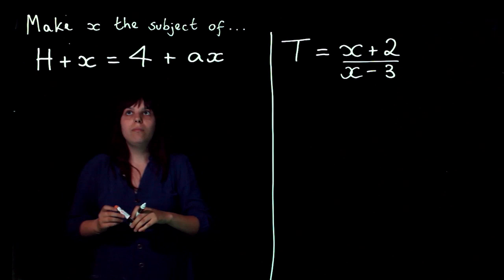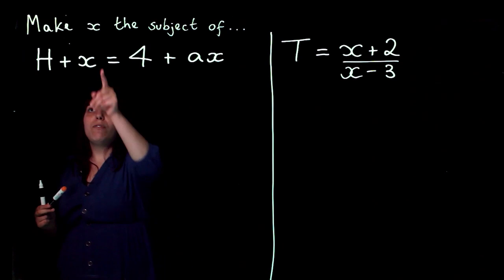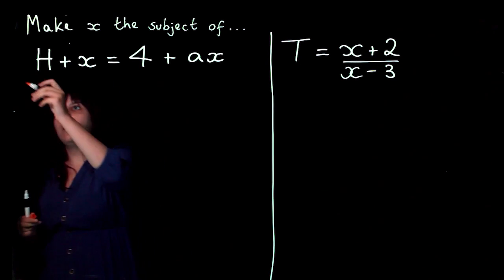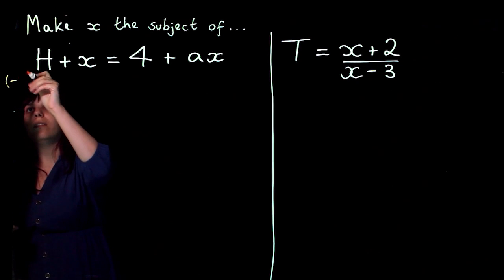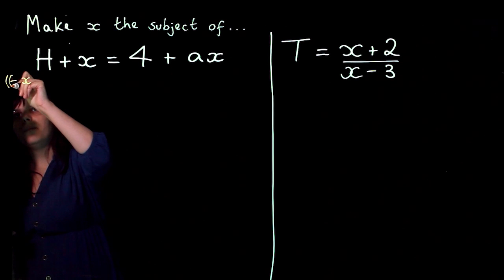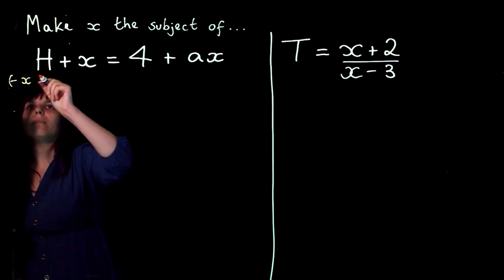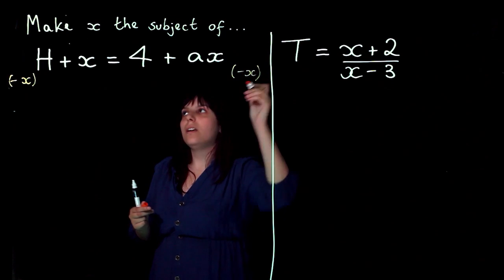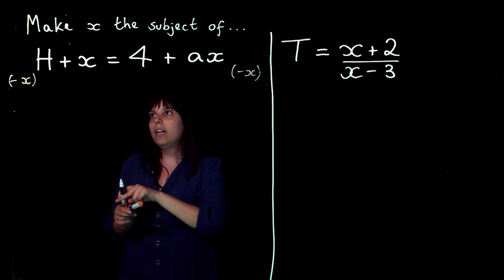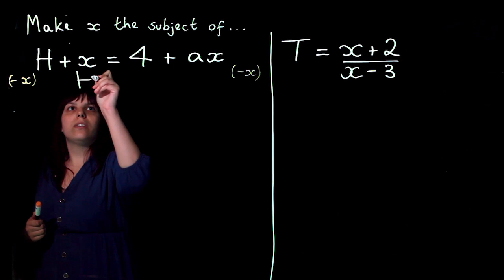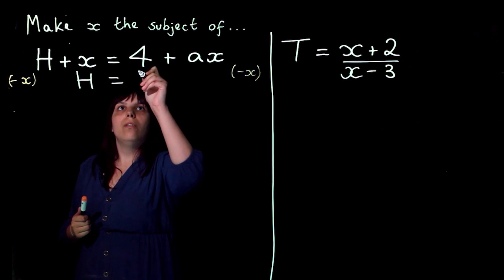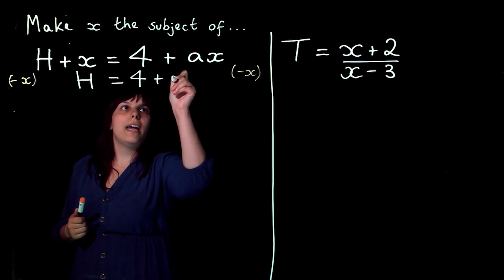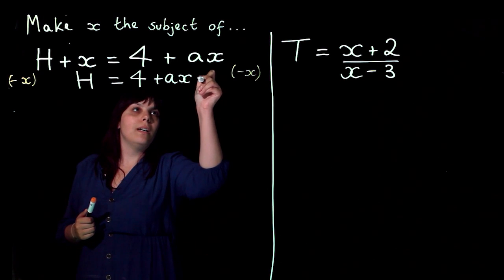So the first thing I'm going to do is get rid of this plus x. So how do I get rid of plus x? I subtract x, and I'm going to do that from both sides.